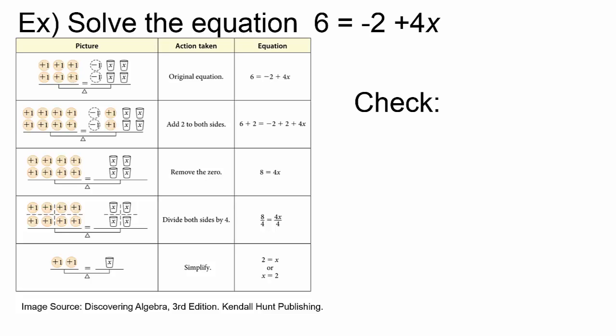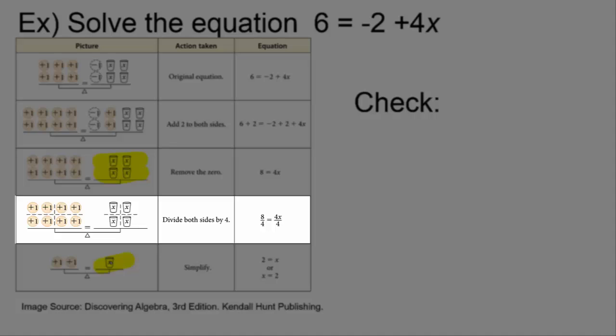Here's the equation 6 equals negative 2 plus 4x, solved by the balancing method. The goal is to end up with a single x cup on one side. One way to get rid of something on one side is to add its opposite to both sides. So in this problem, we add 2 to both sides. We actually don't care what 4x equals. We want to know what 1x equals. So we divide both sides into four groups and see that each cup must have 2 in it.